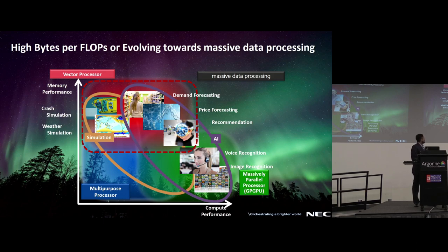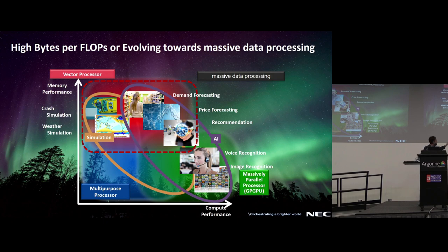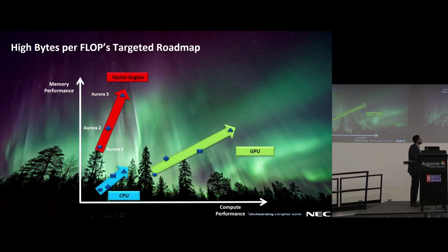By massive SIMD, I mean that if you see this graph of compute performance and memory performance, vector engines would lie somewhere in the top left area. Although multiprocessors and GPUs have been concentrating towards compute performance, and CPUs toward generic performance, we have been concentrating on the top left. Our target is to have high bytes per flop.